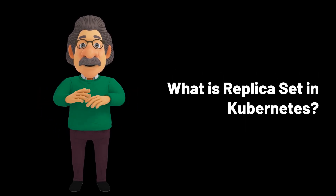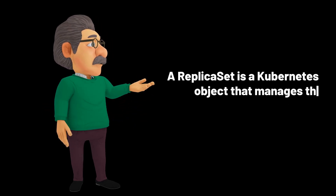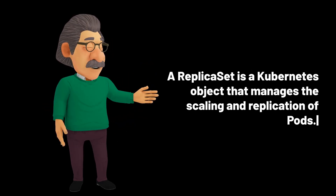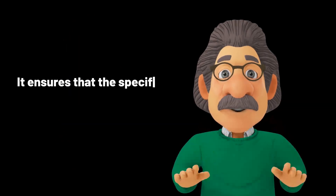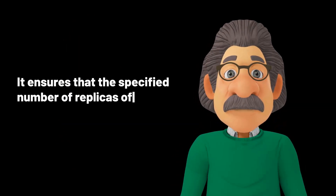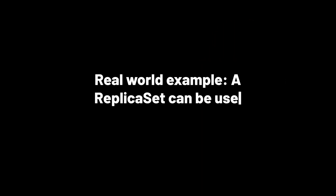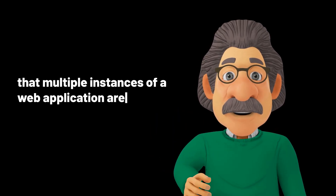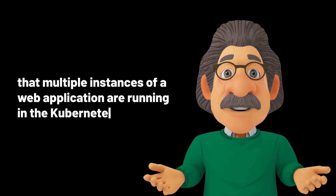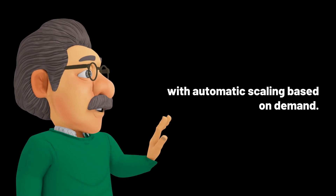What is a replica set in Kubernetes? A replica set is a Kubernetes object that manages the scaling and replication of pods. It ensures that the specified number of replicas of a pod is running at any given time. Real-world example: a replica set can be used to ensure that multiple instances of a web application are running in the Kubernetes cluster, with automatic scaling based on demand.